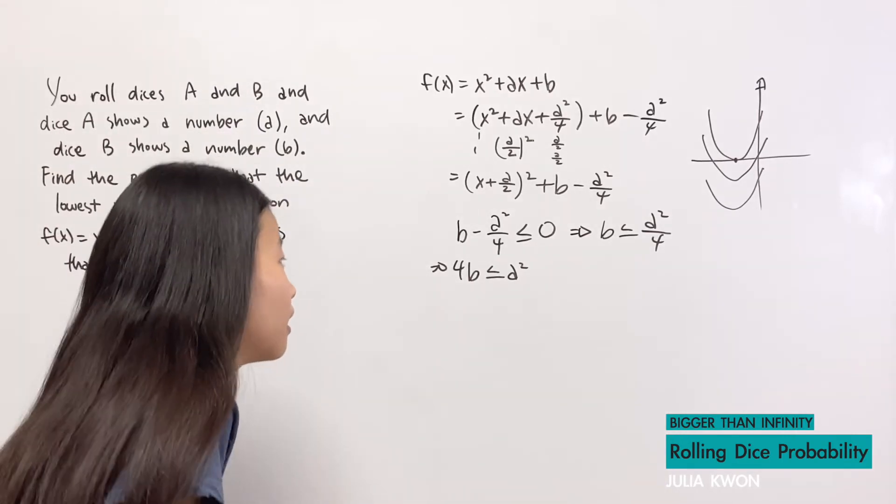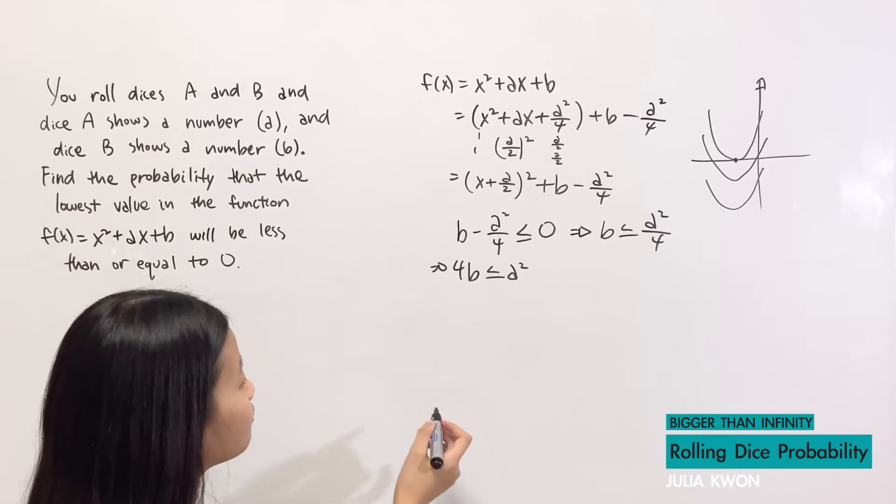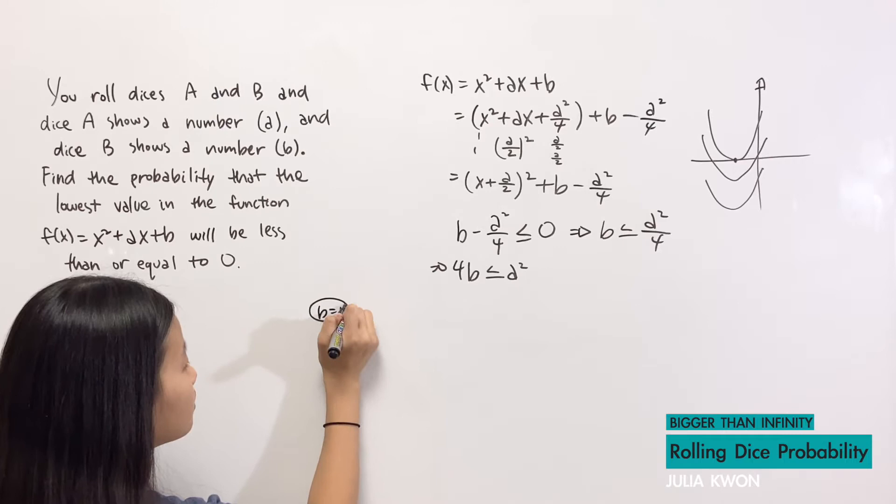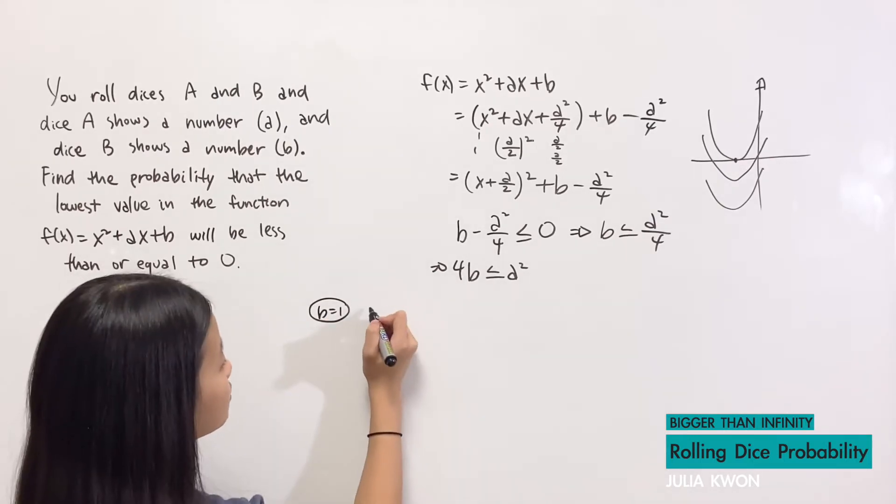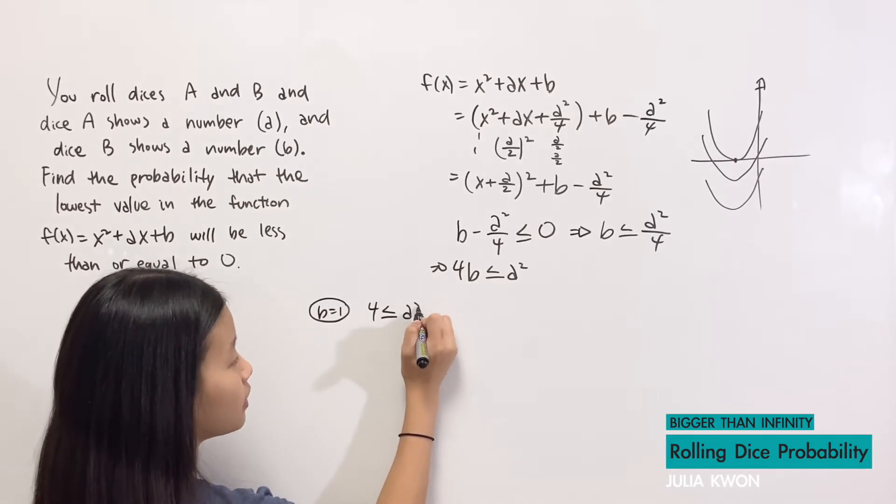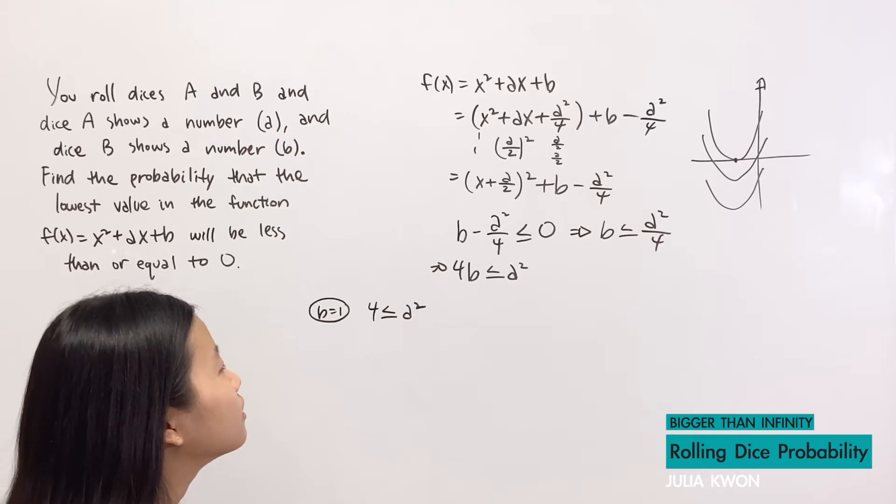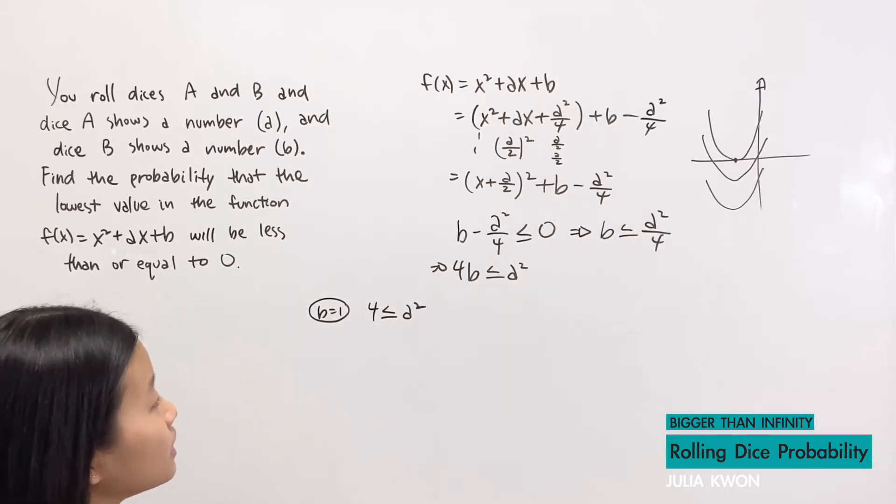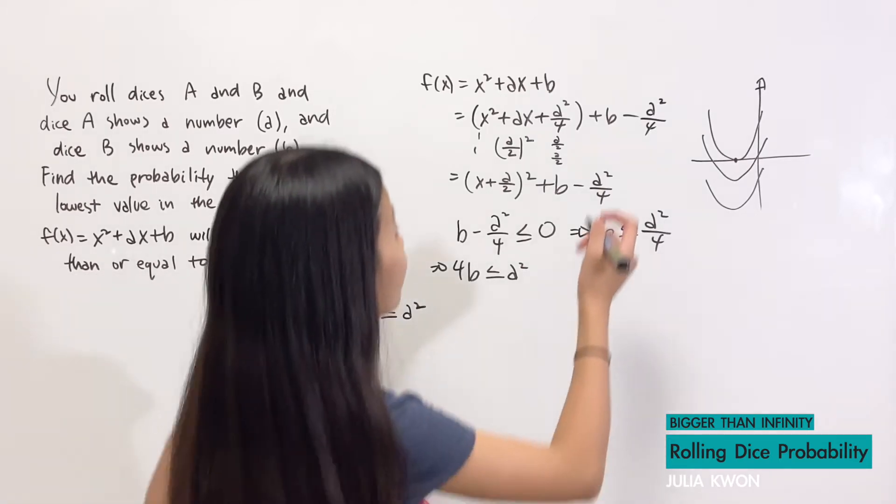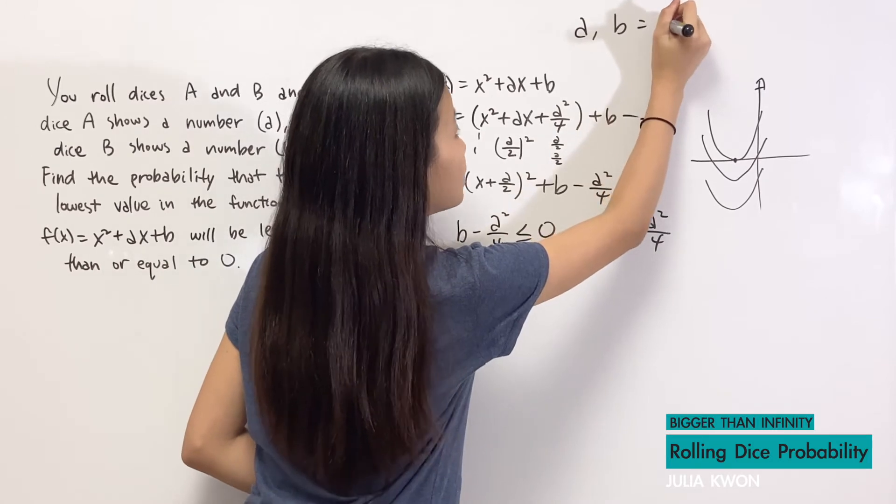So first, if b equals 1, then our equation would be 4 ≤ a². And remember that b and a represent the numbers that you get from rolling a dice, which means that a and b can only equal 1, 2, 3, 4, 5, or 6.